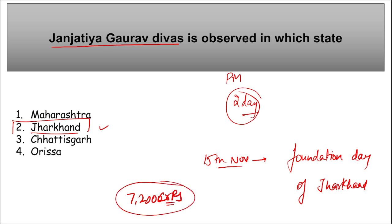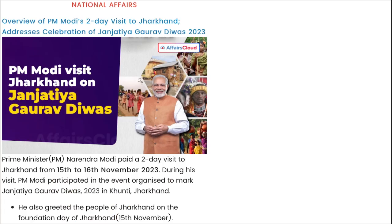The ₹7,200 crore will be utilized in various sectors including rail, road, education, healthcare, coal, petroleum, and natural gas to enhance infrastructure and services in Jharkhand. PM Modi was on a two-day visit from 15th to 16th November and participated in the event marking Janjatiya Gaurav Divas, which coincided with Jharkhand's foundation day on 15th November.